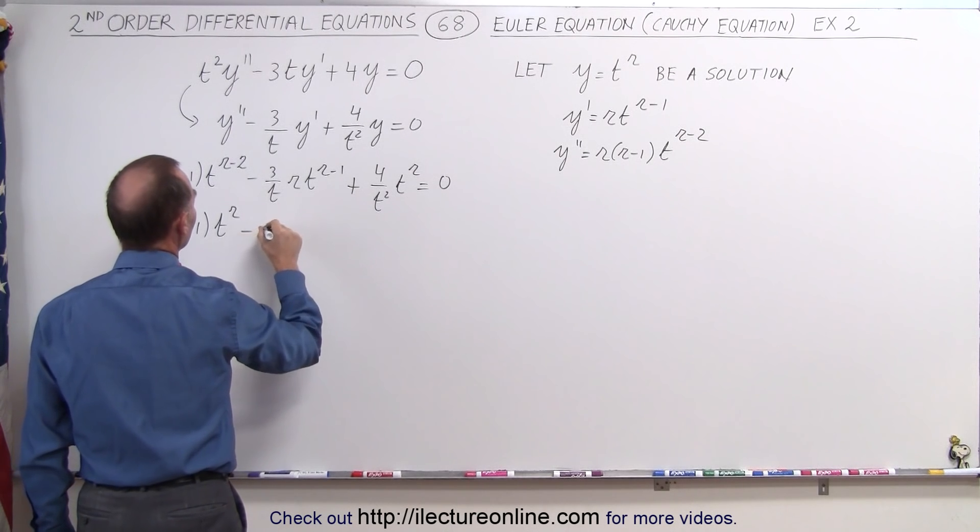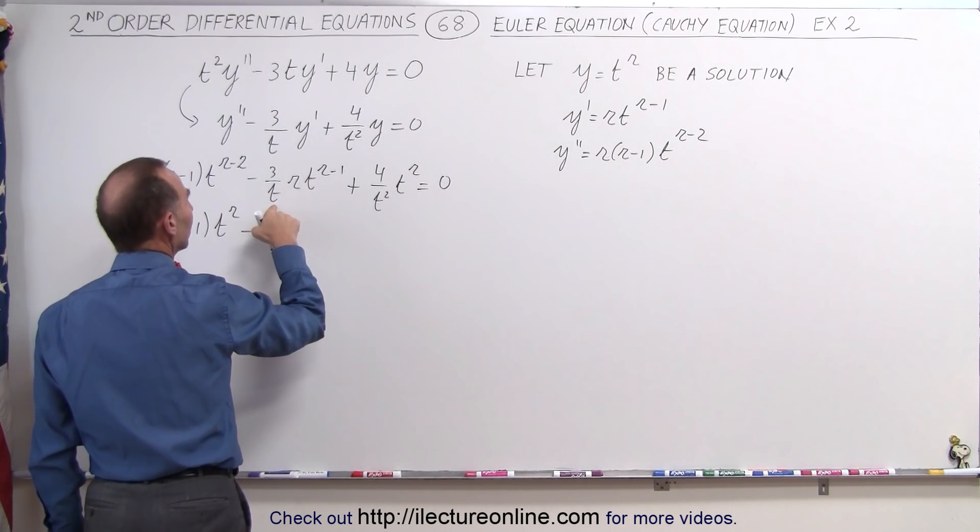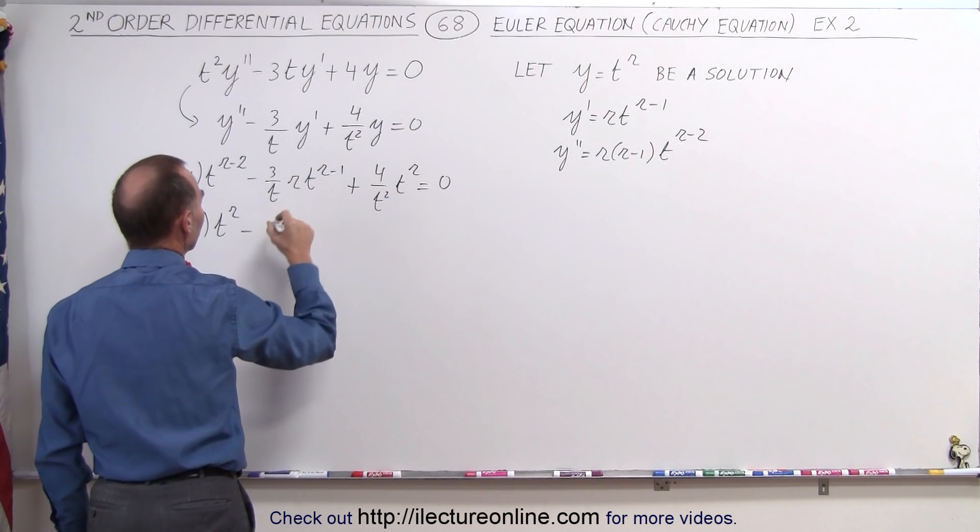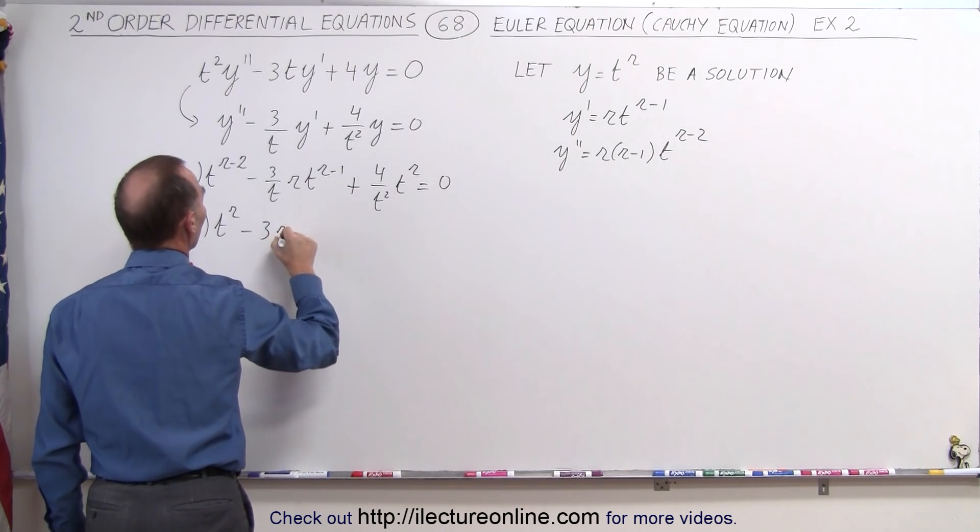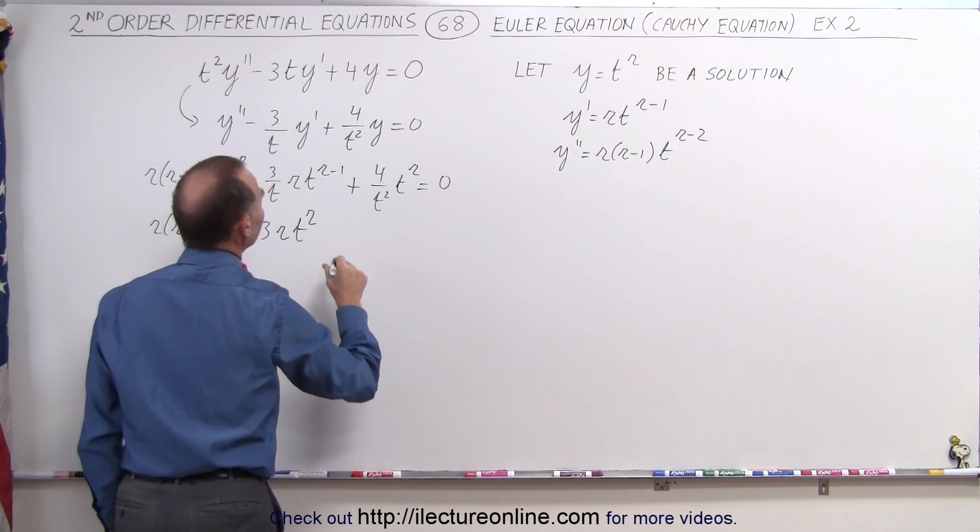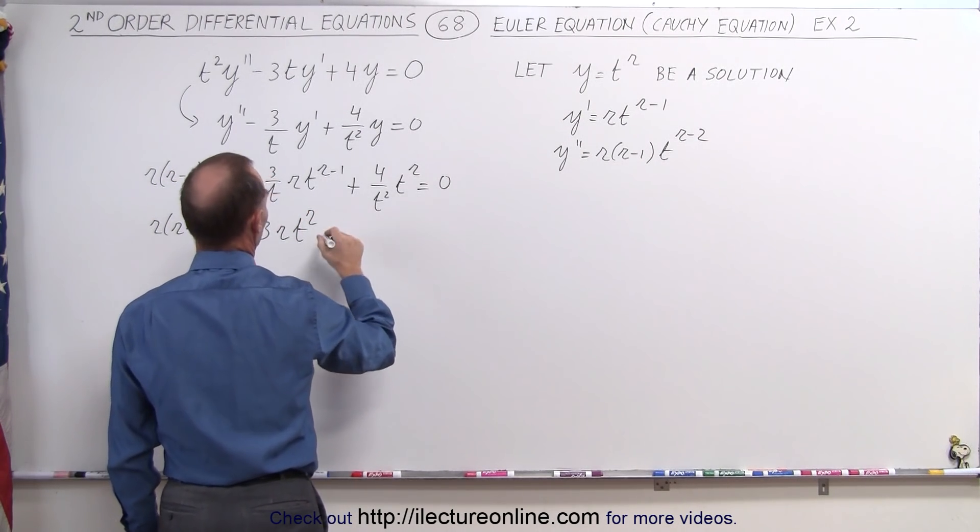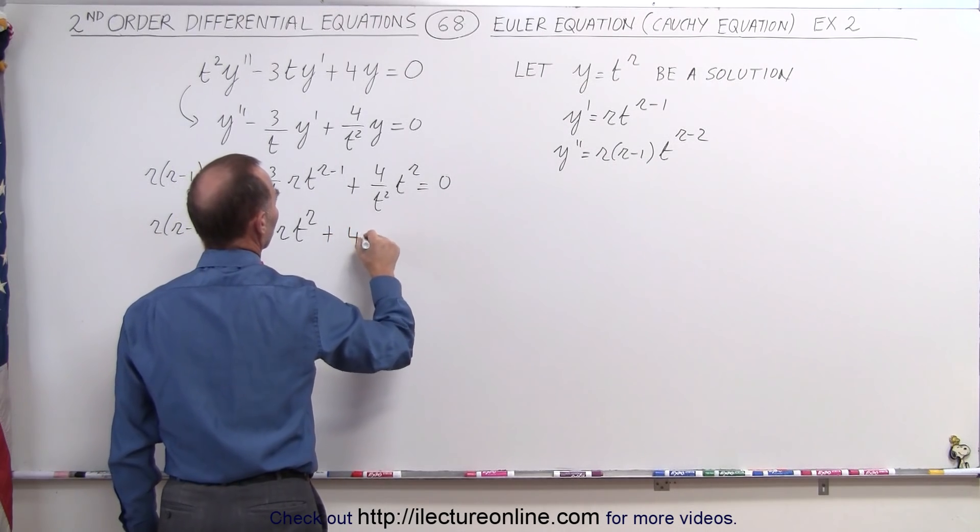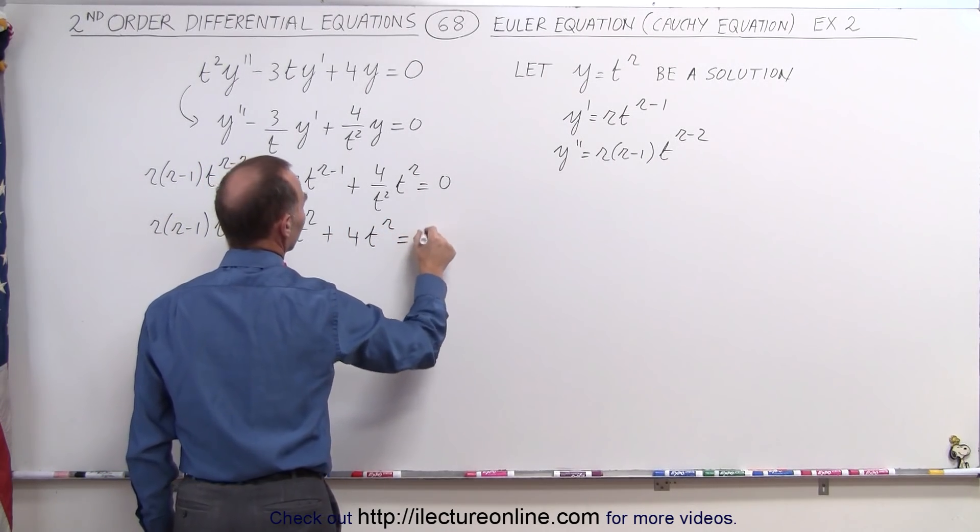Here, one of the t's cancels out with this t, the other cancels out with that, so we have -3r·t^r. And then we end up with +4t^r = 0.